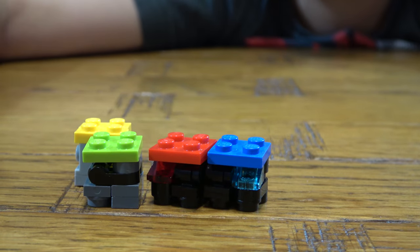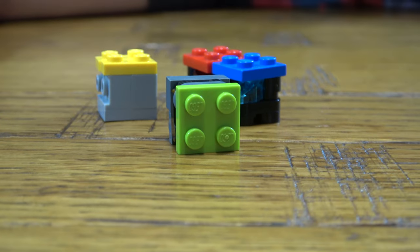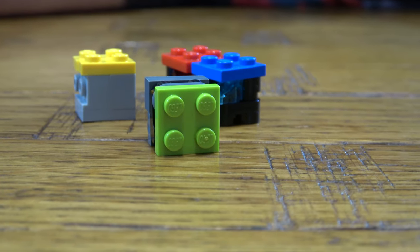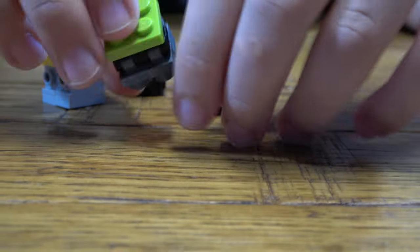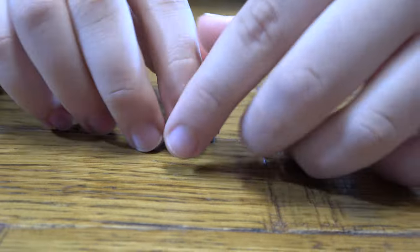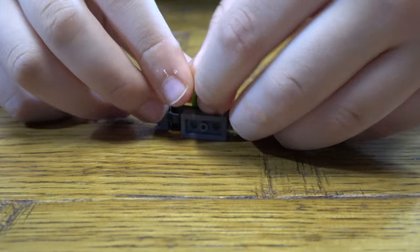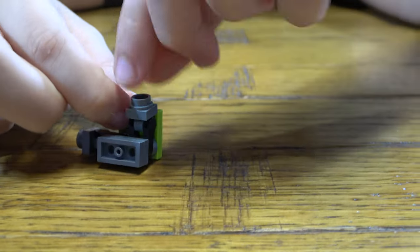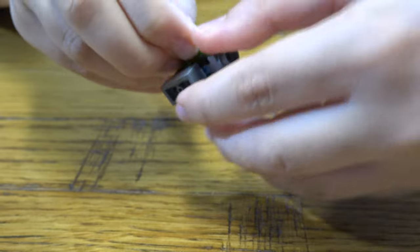Now you might be thinking how are these four little cubes going to be one transformer. Let's find out. So first we are going to get this green one, the most important. We are going to open up like this. This is going to be the body.